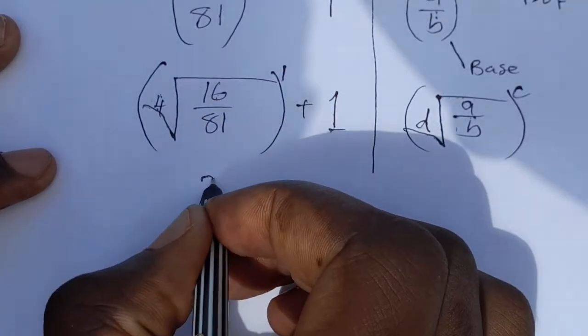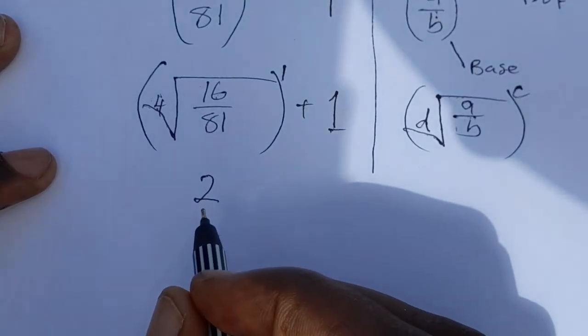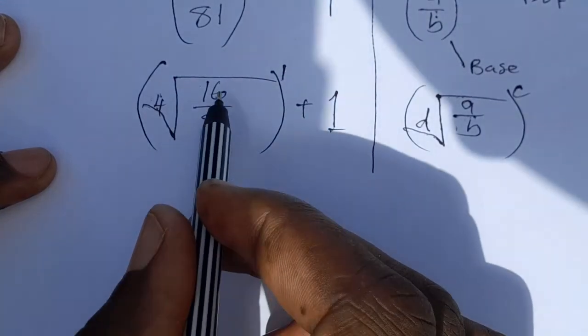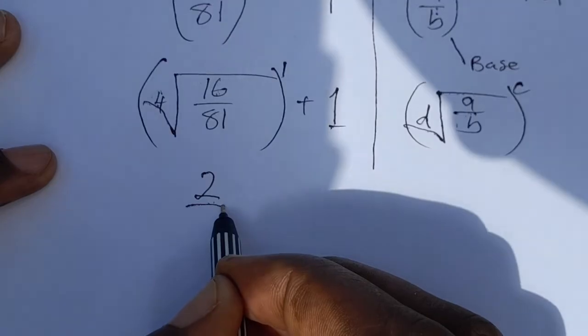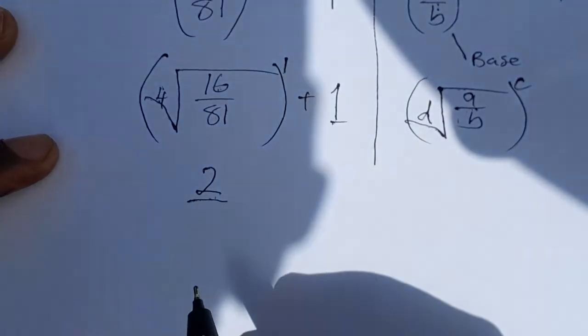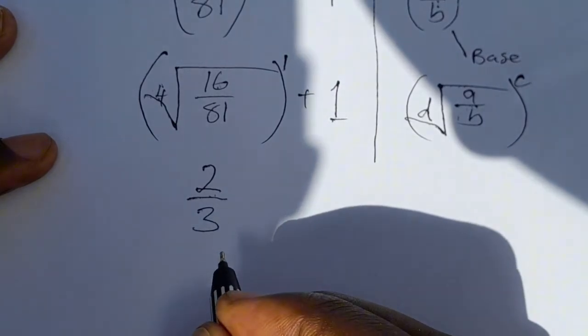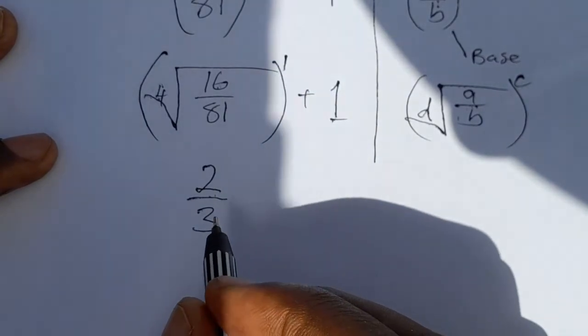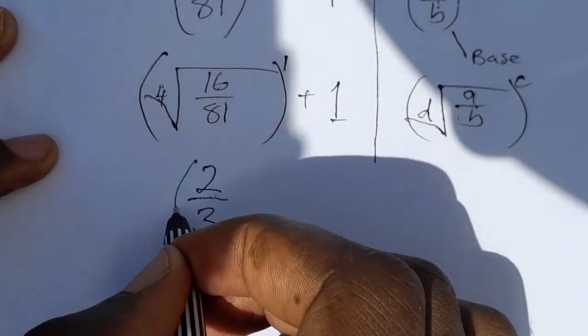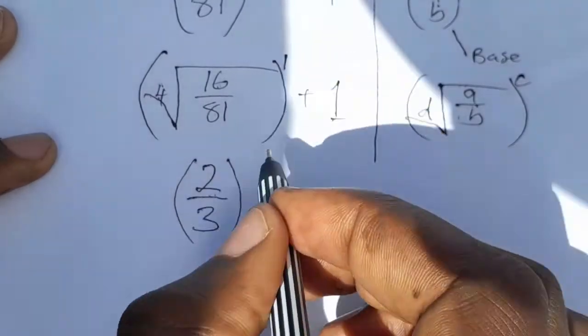So we are going to say the fourth root of 16 is 2, because 2 times 2 times 2 times 2 you get back 16. Then over, fourth root of 81 is 3, because 3 times 3 times 3 times 3 is 81. And everything is being raised to the power 1, then plus this one here.